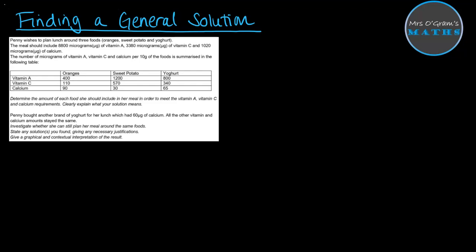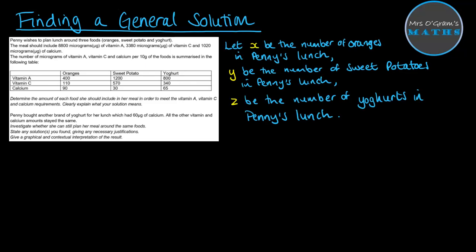Before we get going with setting up equations, we need to determine what our variables are, so define what we're going to represent as number of oranges, sweet potato, yogurt, and so on. Normally I'm an advocate for using letters that represent the thing that you're doing, like O for oranges, S for sweet potato, but because the O is too similar to a zero, that could get confusing. So in this case, I'm using x, y, and z. For each of the requirements for vitamin A, C, and calcium, we can set up an equation of how many of the oranges, sweet potatoes, and yogurts we've got to put together towards the total that we want in Penny's lunch that's given in that second sentence at the top.